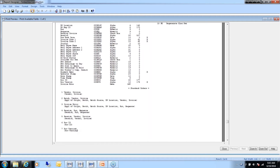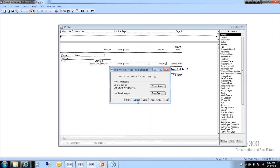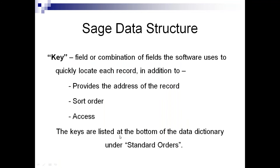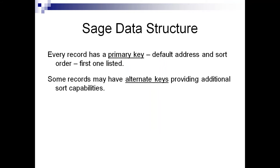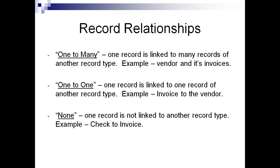At the end of the data dictionary layout are the standard orders. Every record will have at least one; if there are multiple, the first listed is the default. This invoice record is keyed by vendor invoice. You have the option to change that order when designing the report by selecting any secondary or alternate keys. If what you need isn't listed, you can set up a custom sort order for the report.